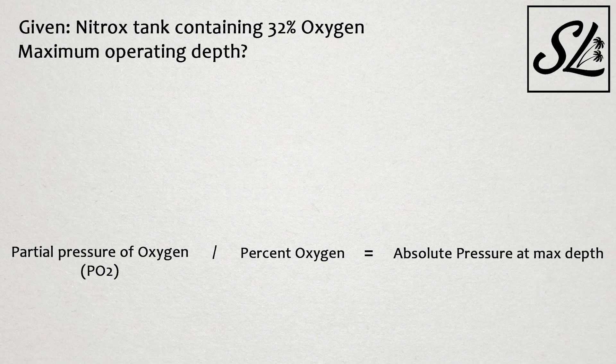So for this one, we will take our PO2, which is 1.4 as always, and divide by our percent oxygen. This number can be found simply by taking our given oxygen percentage and placing a decimal point in front of it.